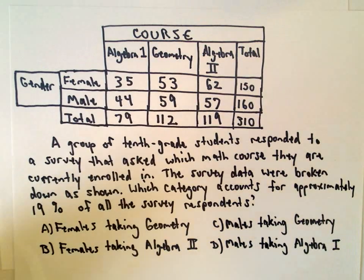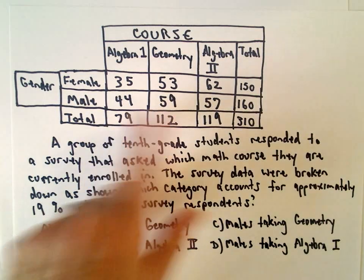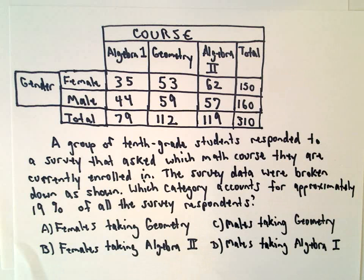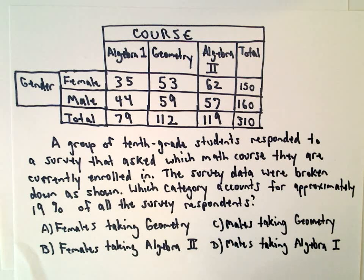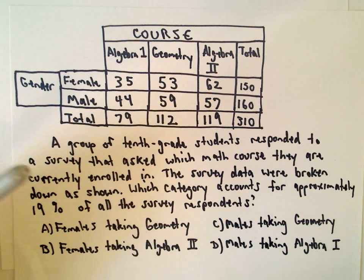In this example, we're given some information about different genders — female and male — taking different classes. A group of 10th grade students responded to a survey that asked which math course they are currently enrolled in. The survey data were broken down as shown in our table here.